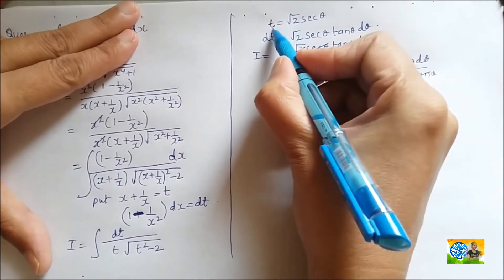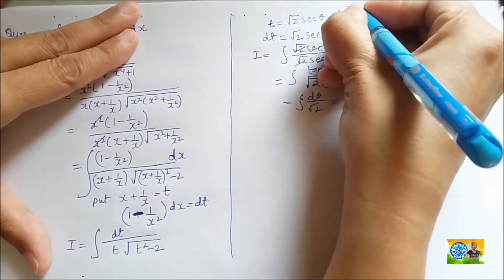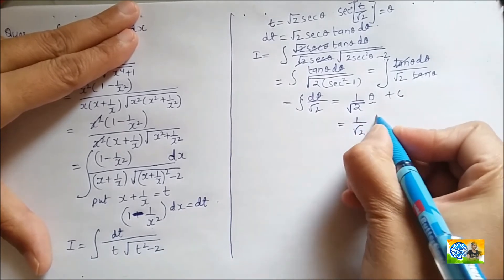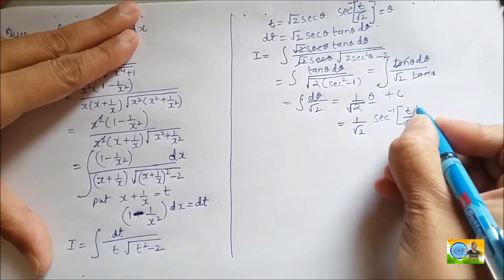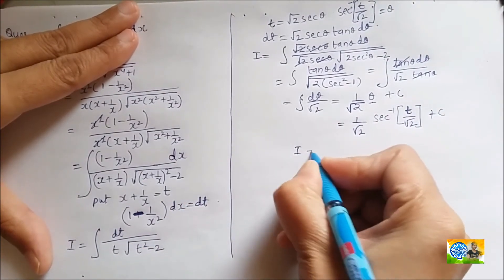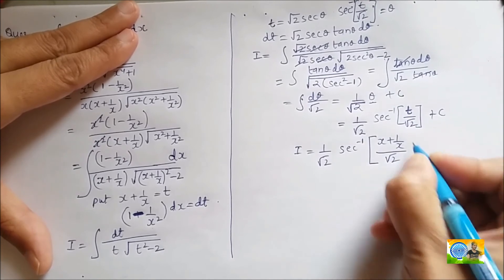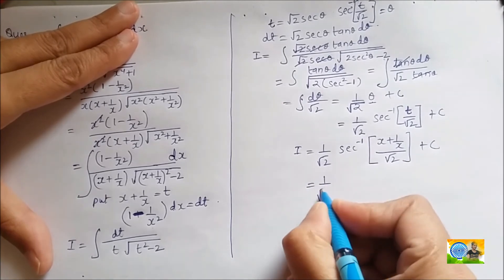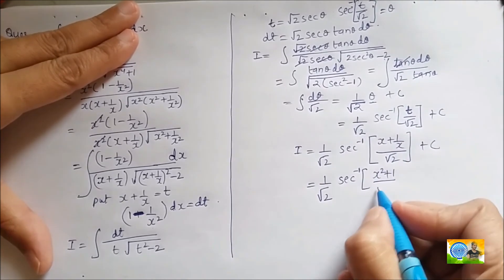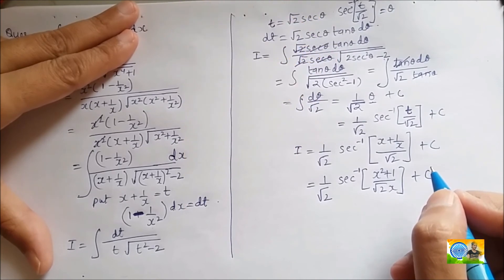The value of θ comes from t = √2 sec θ, so θ = sec⁻¹(t/√2). Therefore, the result is (1/√2) sec⁻¹(t/√2) + c. Substituting back t = x + 1/x, the integral equals (1/√2) sec⁻¹((x² + 1)/(√2 x)) + c. Comment if you have any doubt or if you find a simpler way to do this question. Thank you for watching.